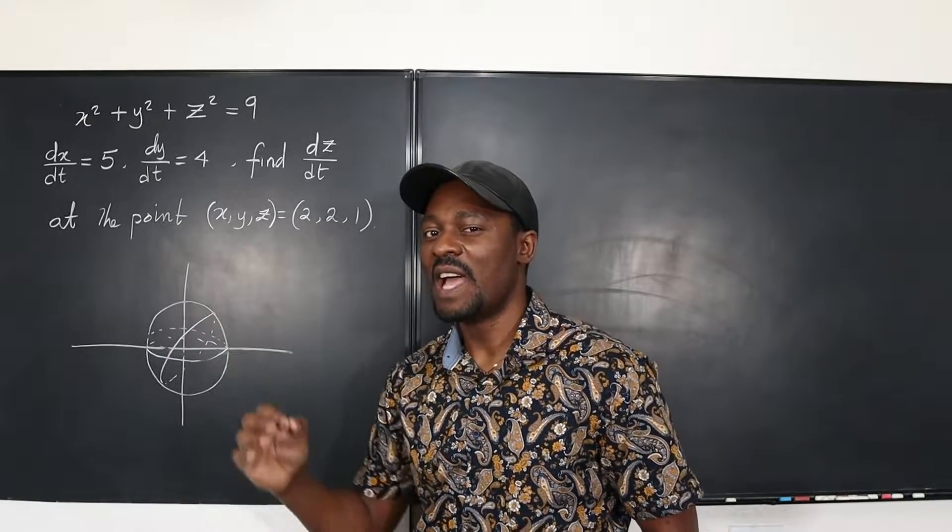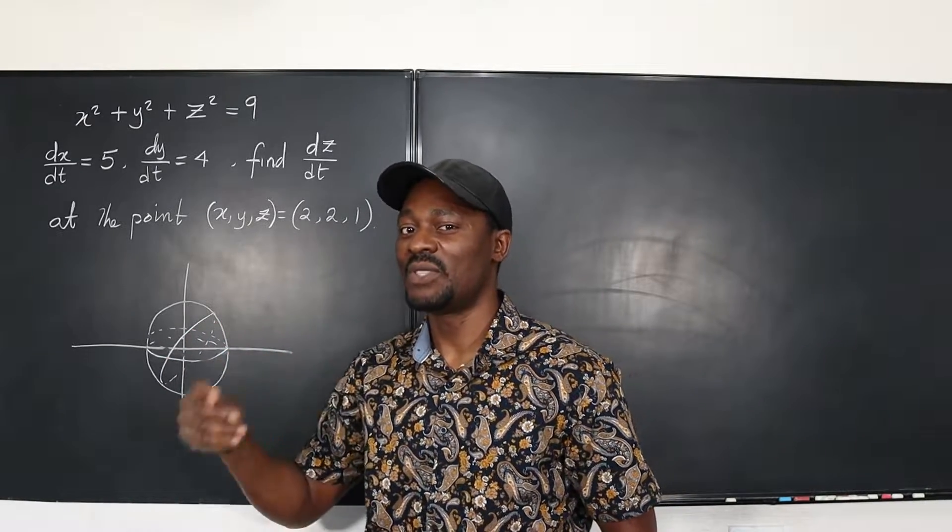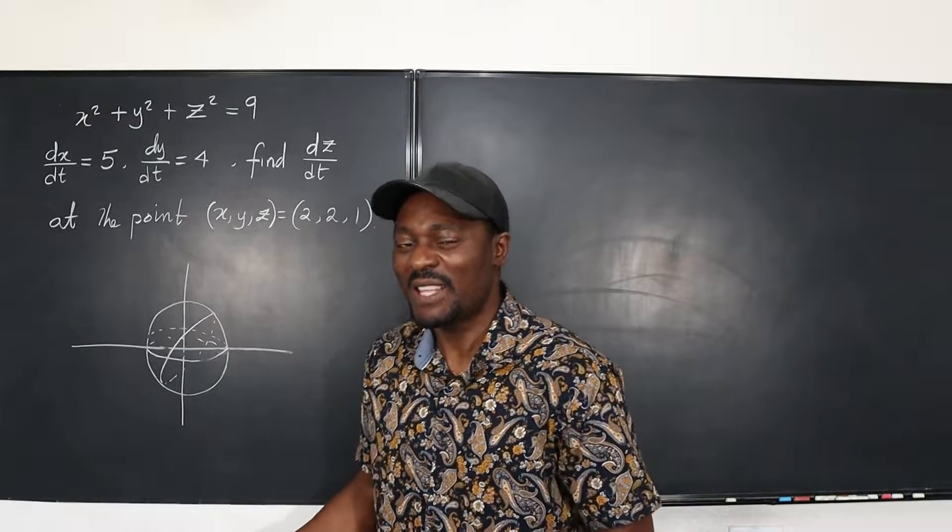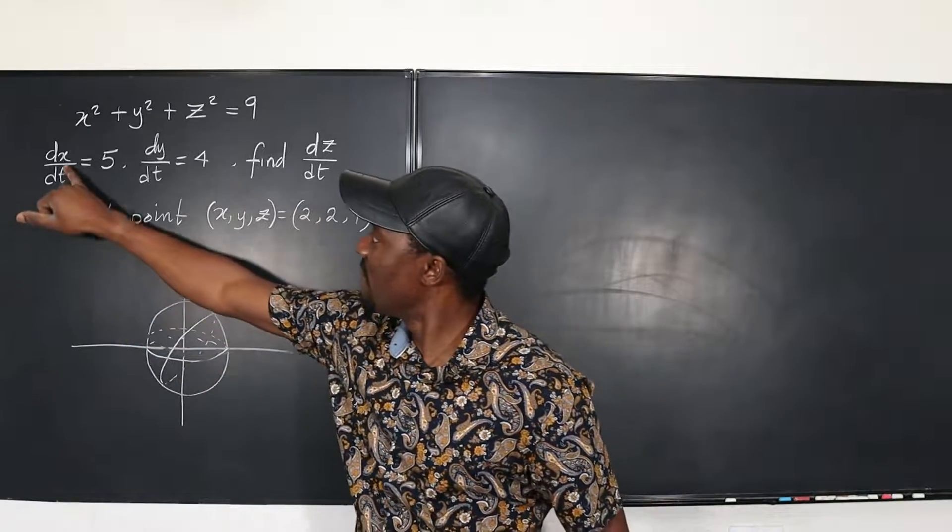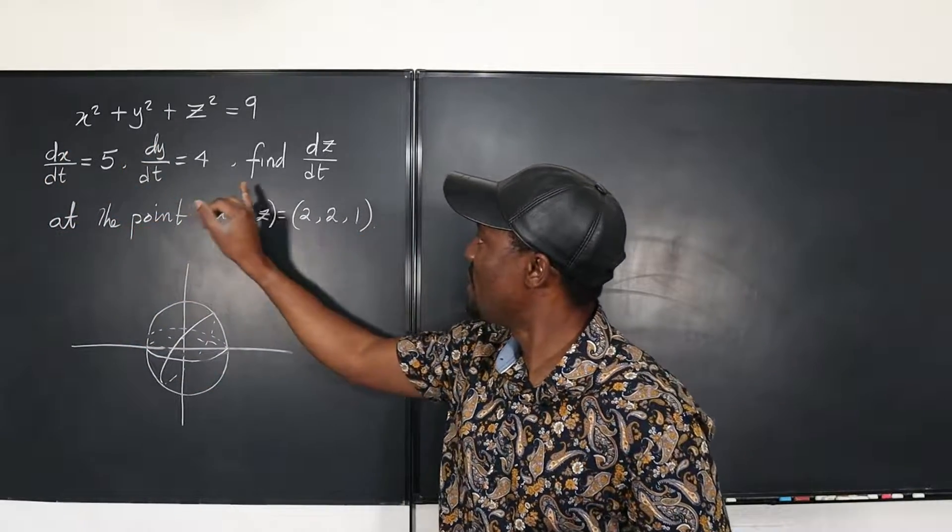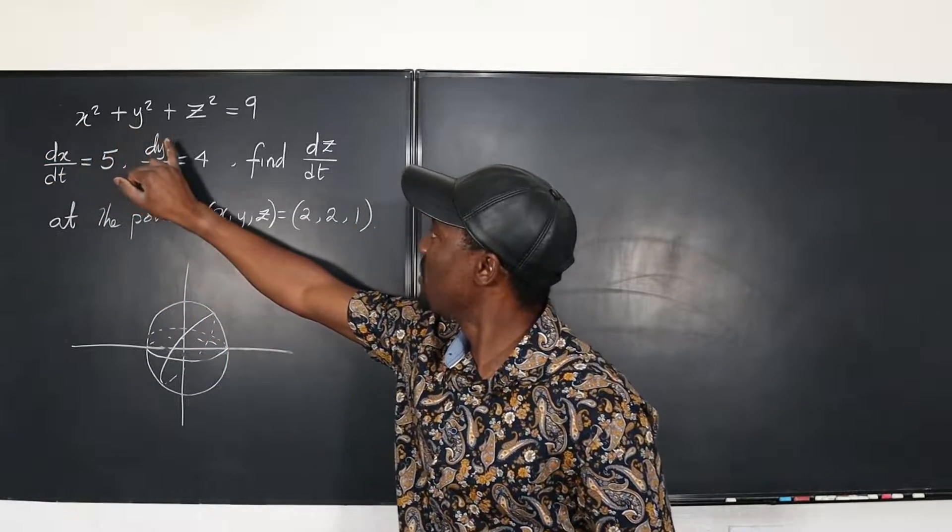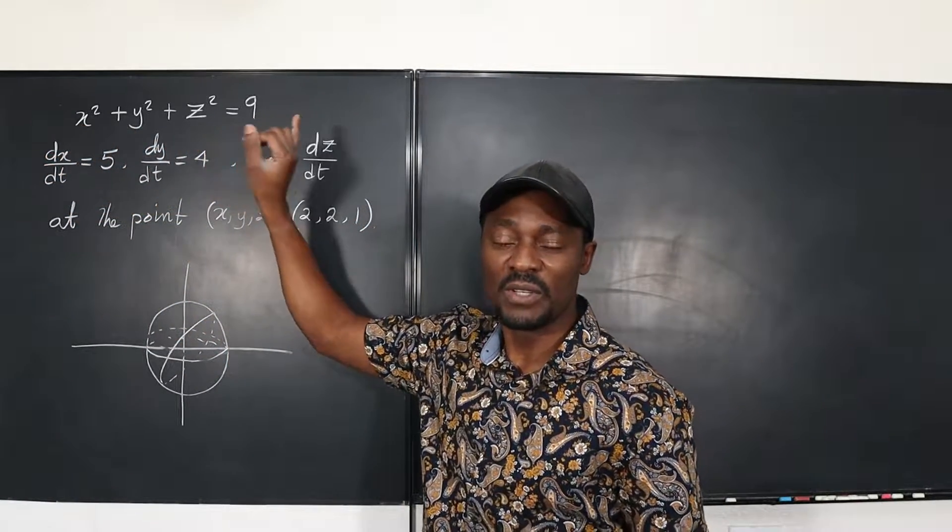You have to know that x is changing with respect to t, y is changing with respect to t, and z is changing with respect to t. And that's what you have to do. So they've given us dx/dt, dy/dt, we need to find dz/dt. But all we know is that the square of x plus the square of y plus the square of z is always equal to 9.